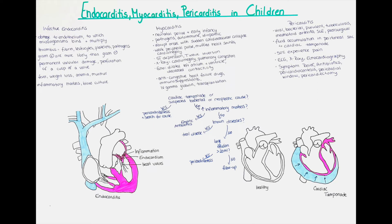In pericarditis, usually the pericardial sac as well as the visceral pericardium are affected. Due to the inflammation, fluid often accumulates within the pericardial sac leading to a friction rub, and depending on the fluid amount it can compress the heart and prevent it from expanding. Around 50% of patients experience pain, which can range from dull over sharp to stabbing pain.